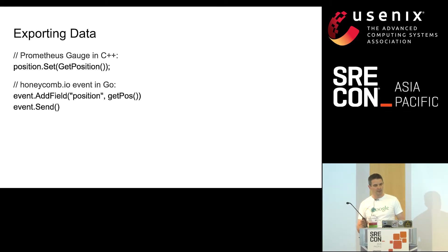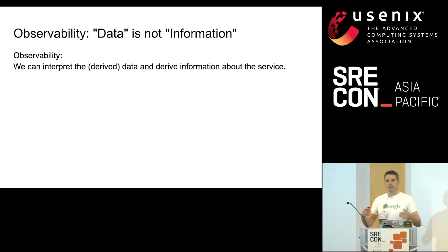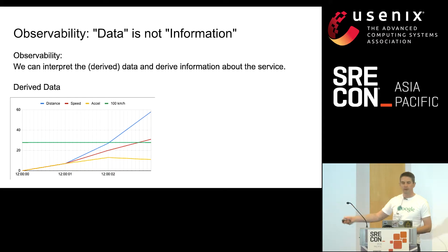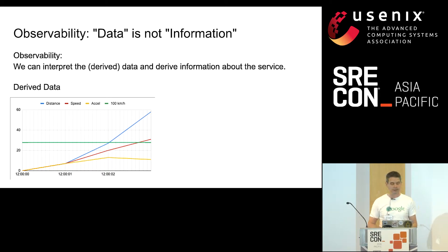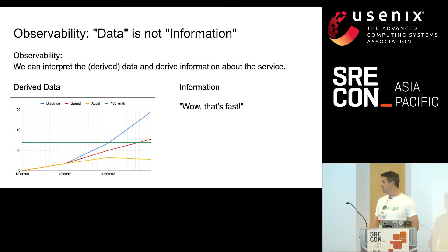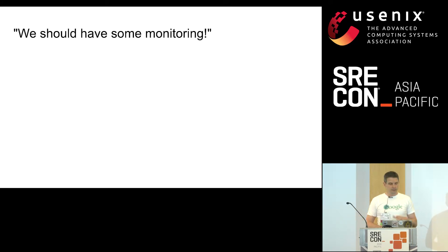So what is information? Observability means that we can interpret the data, or the derived data, and get actual information from it. We usually start by graphing our data. The blue line is the data we collected — position over time. The red line is the speed in meters per second. The yellow line is the acceleration data. For example, we identify that the speed crosses 100 kilometers an hour in under three seconds. We have information — it's a fast car. We want to export good data so that we can derive useful information about the service. This is our requirement.